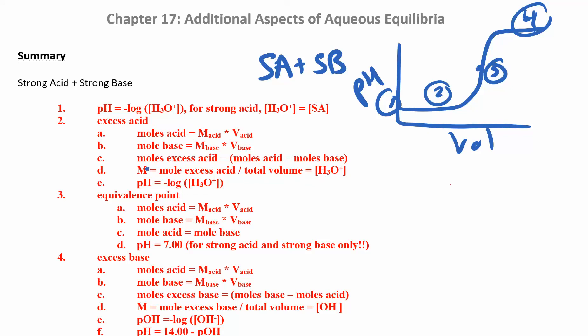Once you have the molar concentration, solve for the pH. The equivalence point is when the moles of acid equal the moles of base, and the pH is going to be seven — but that only works when you have a strong acid and strong base. If you have a weak acid and a strong base, it's going to be more complicated.